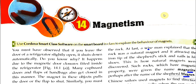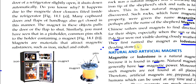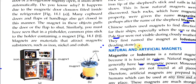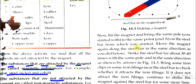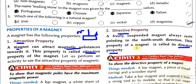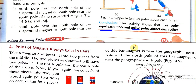We are continuing Chapter 14, Magnetism. In our first video we already studied most of the things in this chapter — natural and artificial magnets, the discovery of magnets, how we can prepare a magnet from a simple iron piece, and the properties. Today our topic will be: poles of a magnet always exist in pairs.